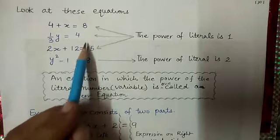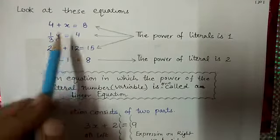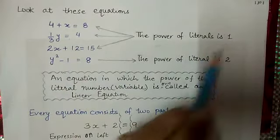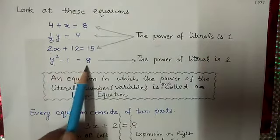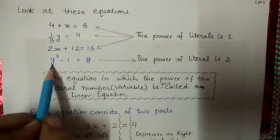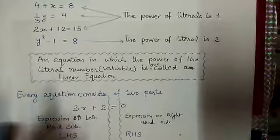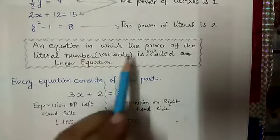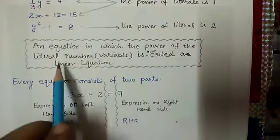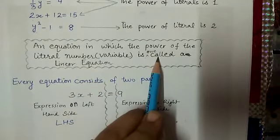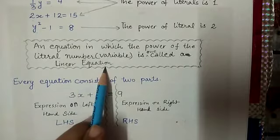In first three equations, the power of literal, that is variable, is 1. And in the last equation, the power of literal is 2. So, an equation in which the power of the literal number, that is variable, is 1, is called a linear equation.